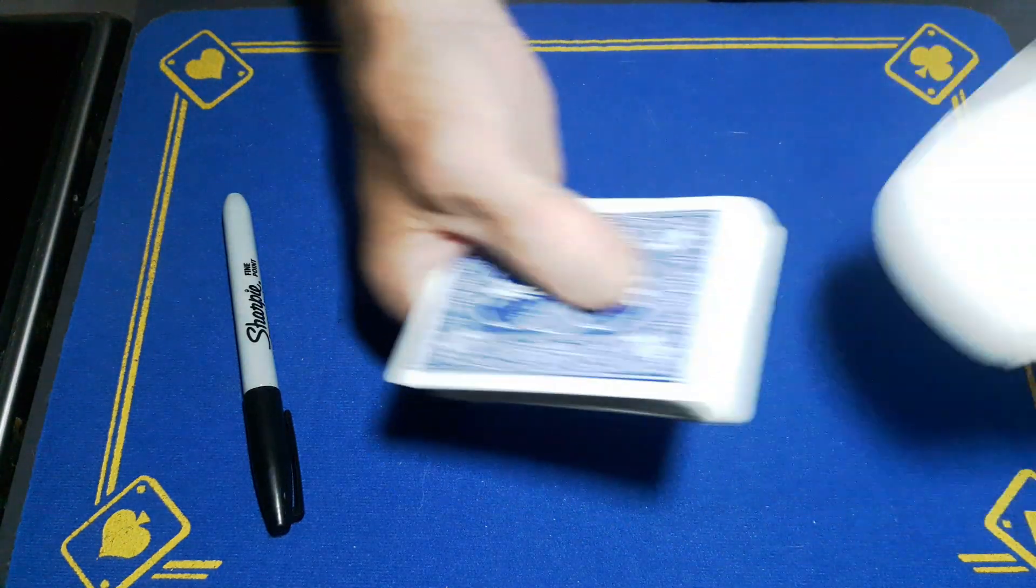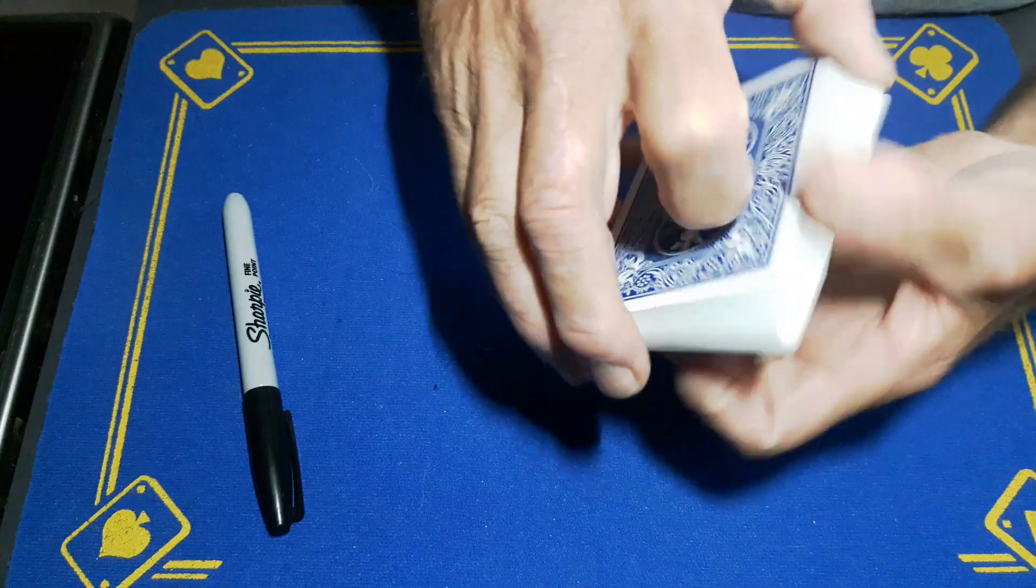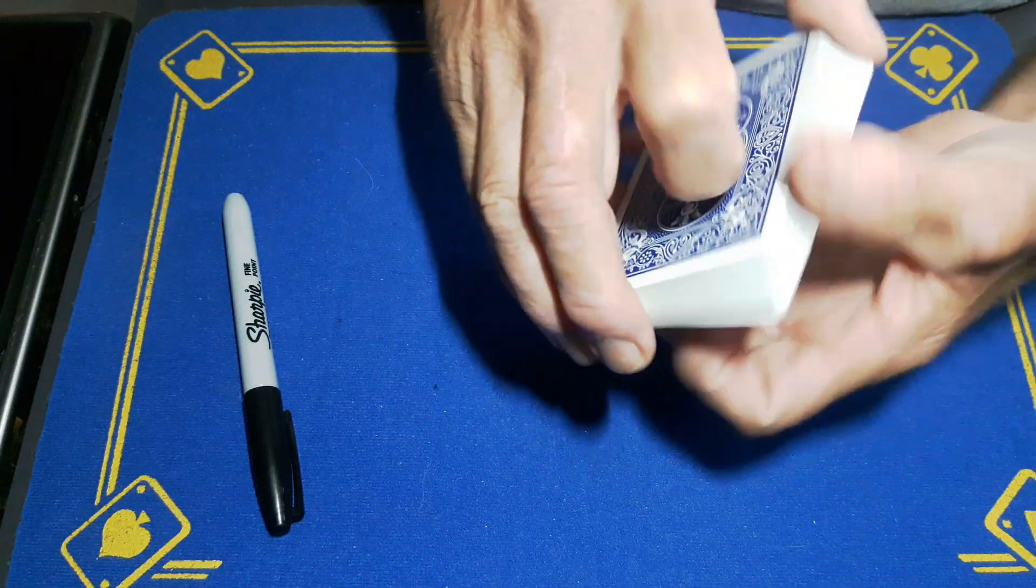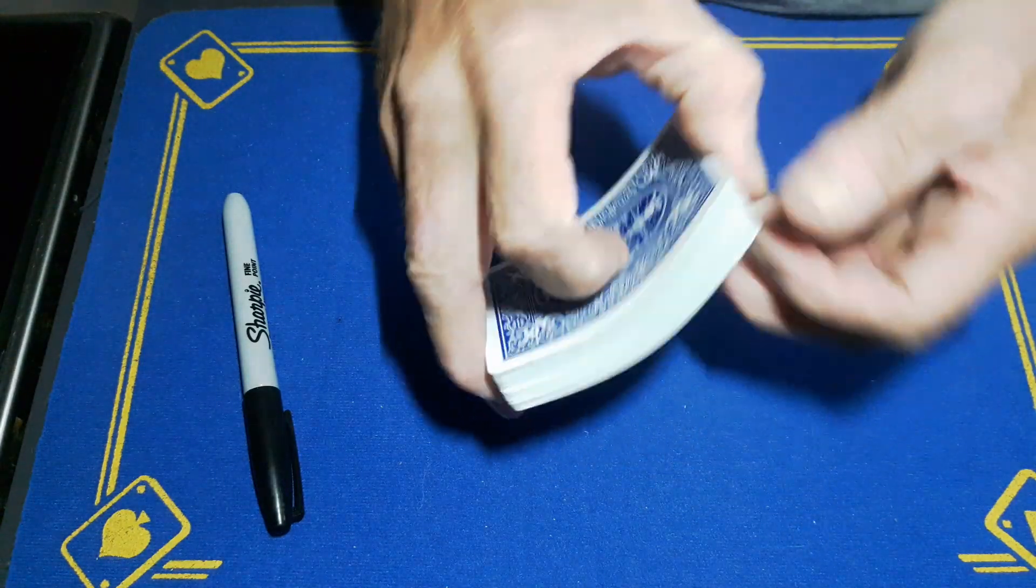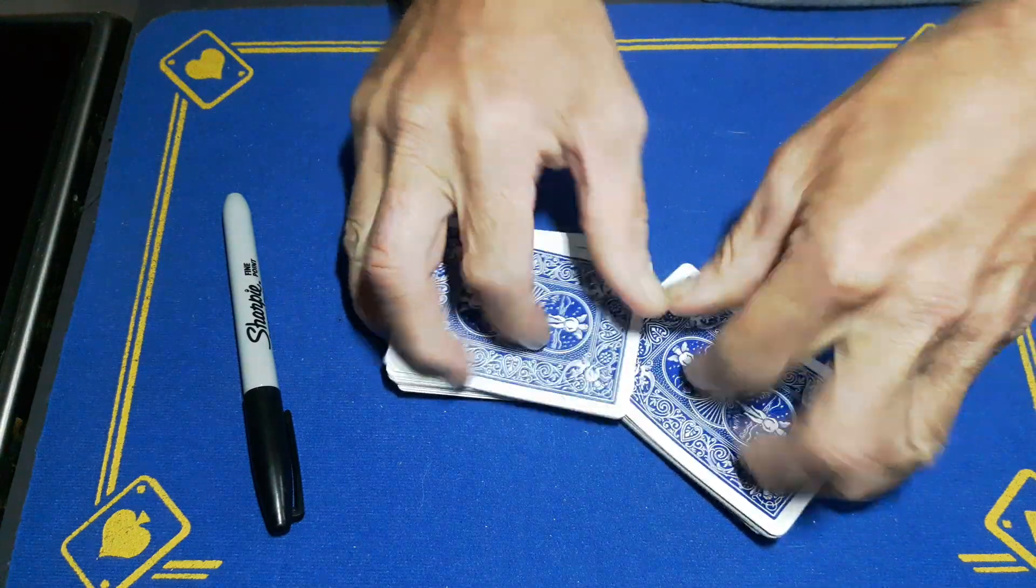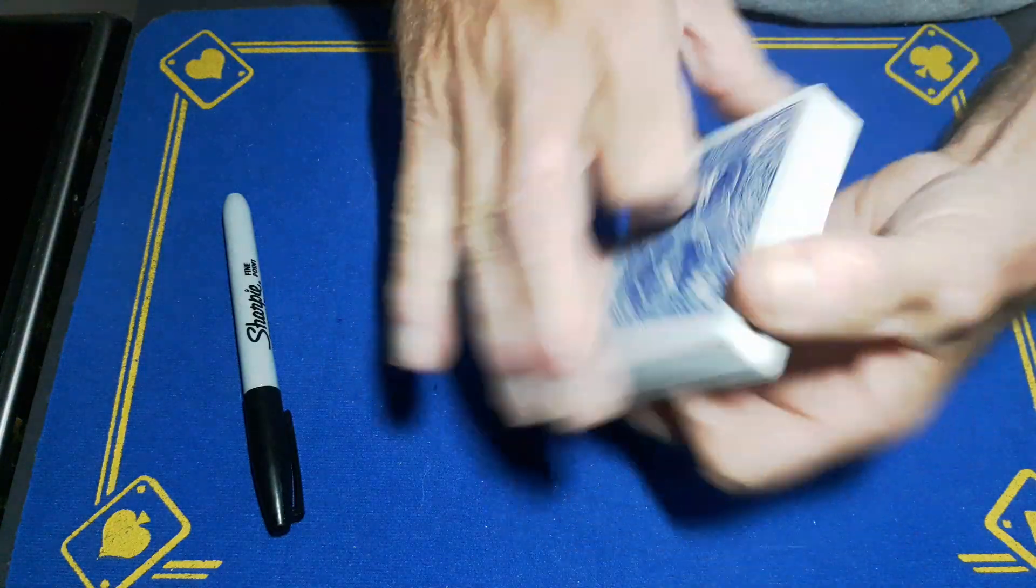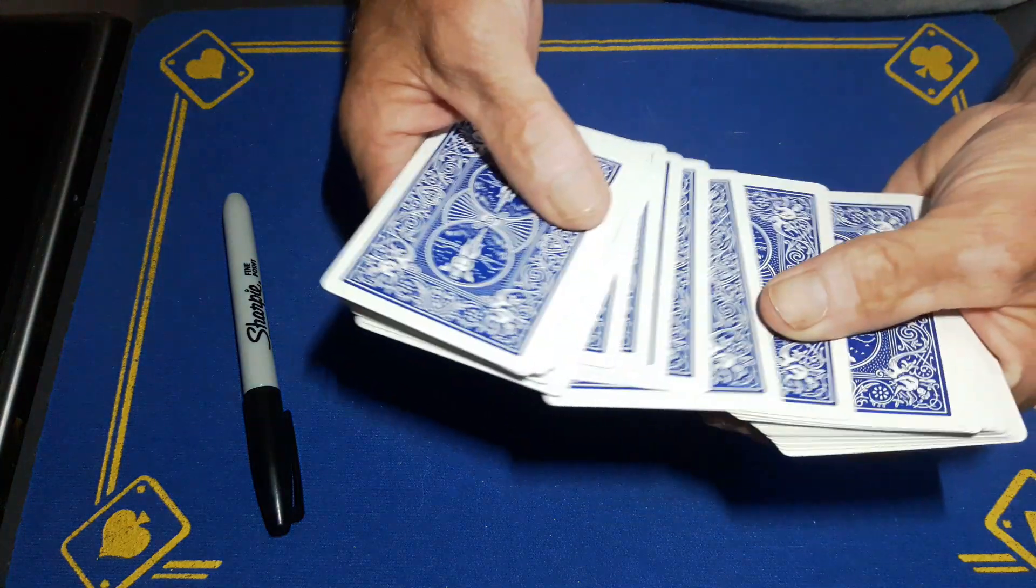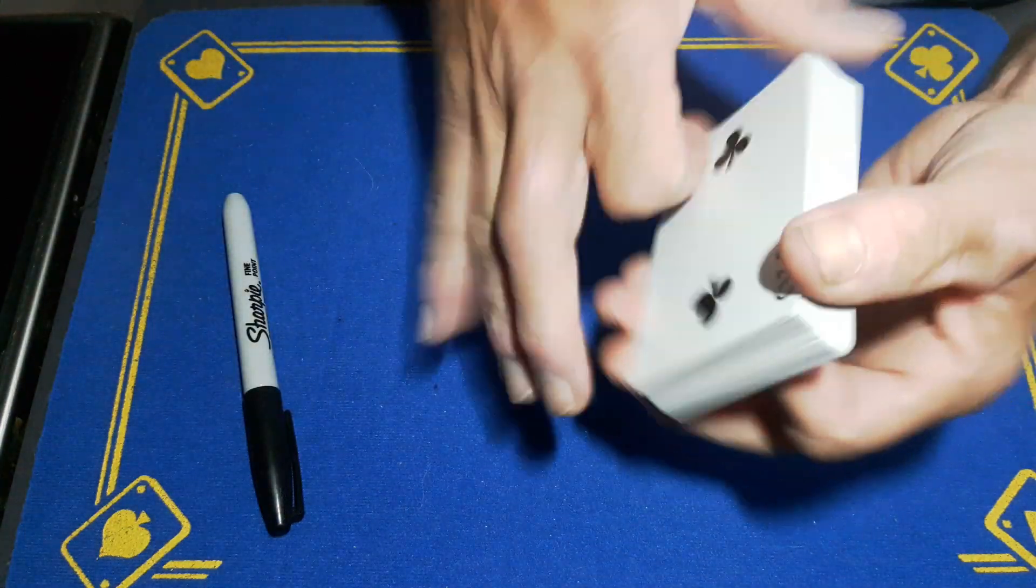Spectator's got a completely free choice to call out stop. In fact, we won't bother calling out stop. We give the cards a shuffle. Spectator can touch any card they want. Let's say they have this one. In this case, it is the two of clubs.